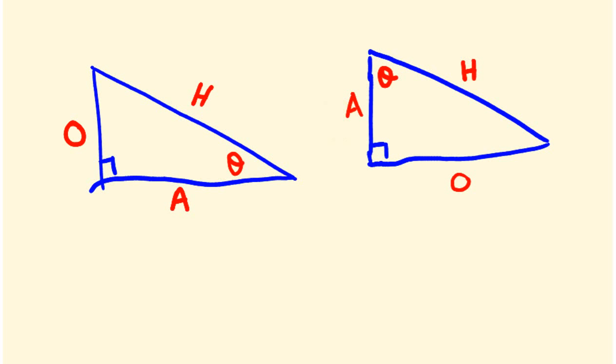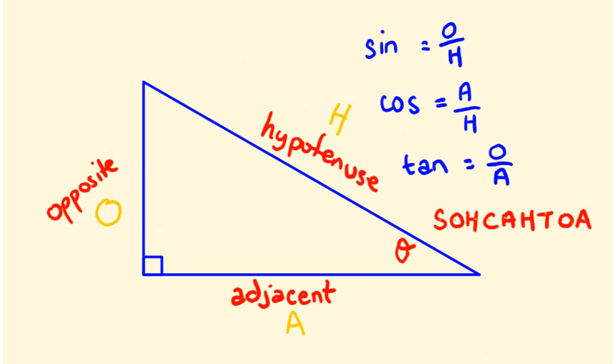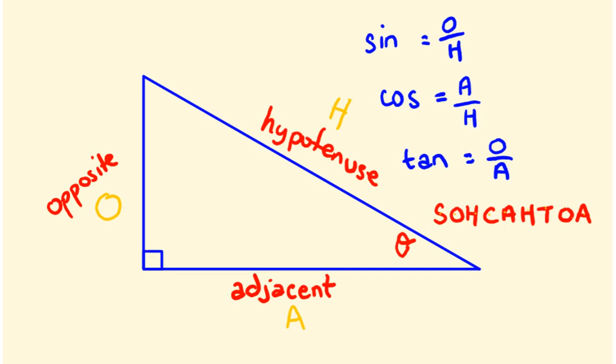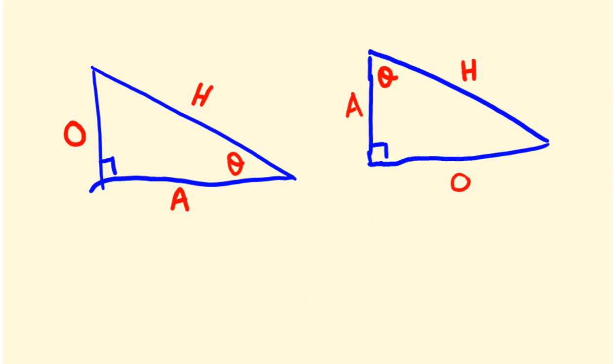So first off, really important that you can go through and label these. The next thing you want to be able to do is you want to be able to remember these particular rules. Because we are going to use them. You can label them, then you can remember these rules. And what was that particular thing again? If you remember, it was some old hags can't always hack their old age.